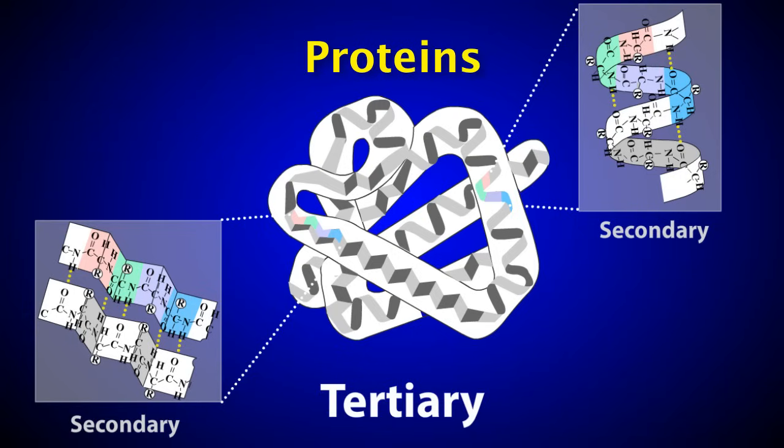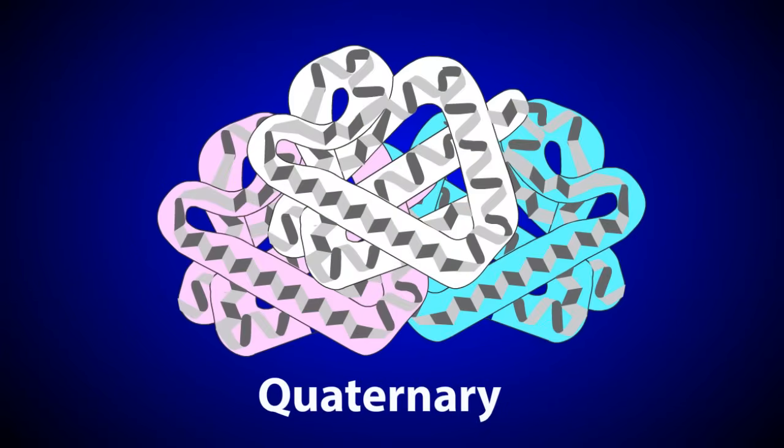In some cases, proteins can form quaternary structures, which consist of interactions between multiple proteins. These interactions often result in the formation of large protein complexes. Examples of proteins that have quaternary structures are hemoglobin and the sodium channels in cell membranes.